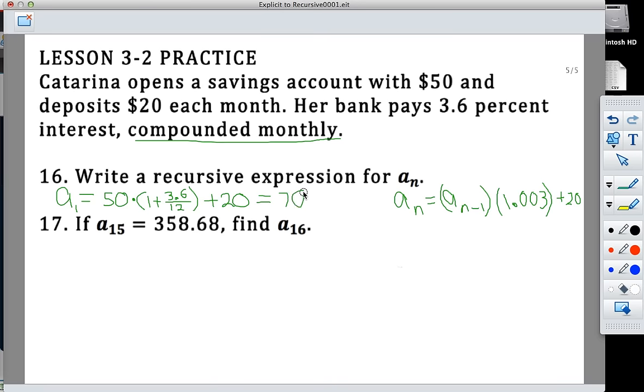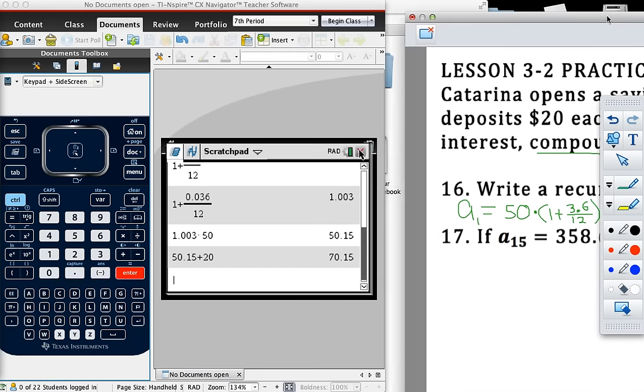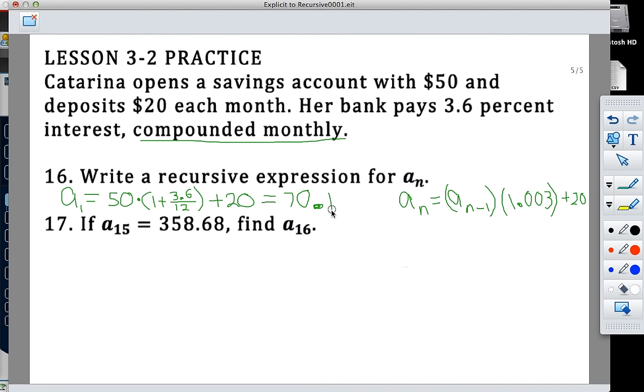So if this question here said find A sub 15 and then A sub 16, then we'd have to keep repeating this process over and over again to find these values, but we don't have to do that. They tell us that our A sub 15 is $358.68, and all we have to do is find A sub 16. So really, the $70.15, that's good to know, but we can just kind of ignore that this time because they give us our previous term right here. So now, if we are looking for A sub 16, then we need to take our previous term, which is the 358.68.